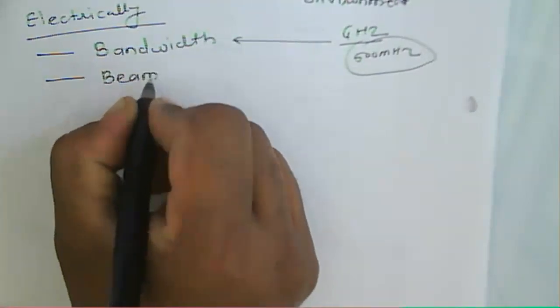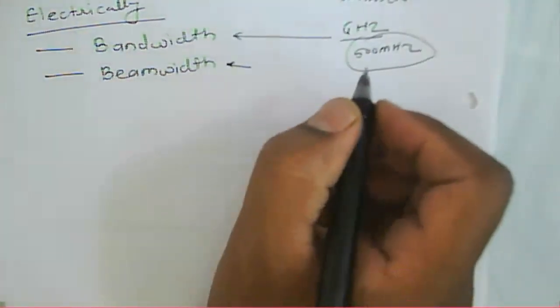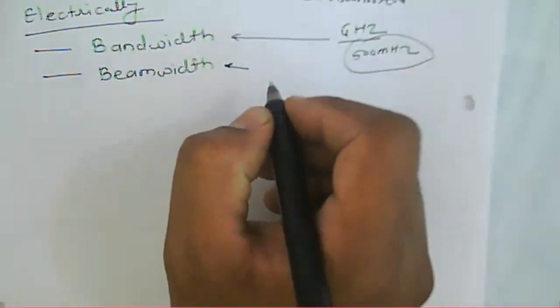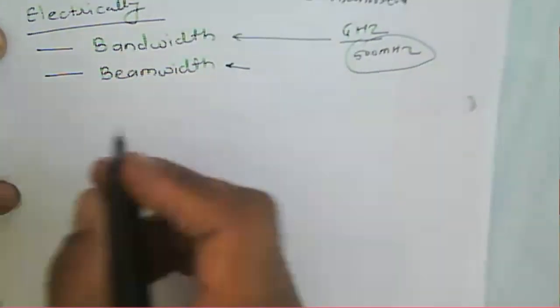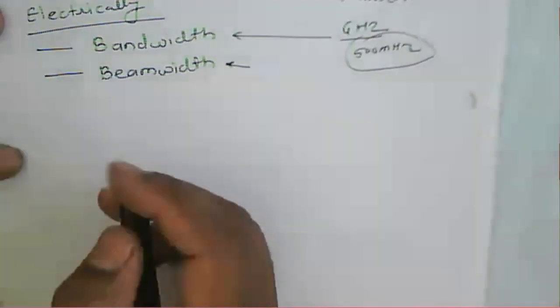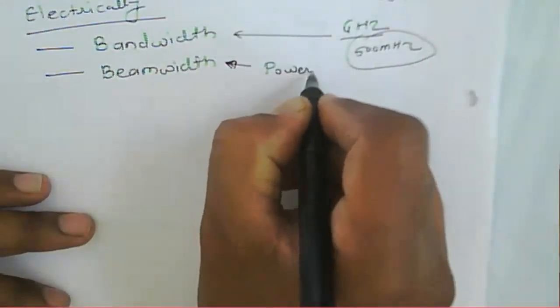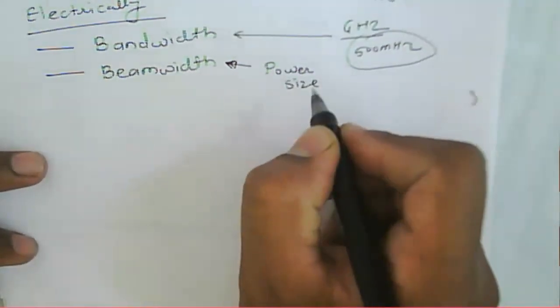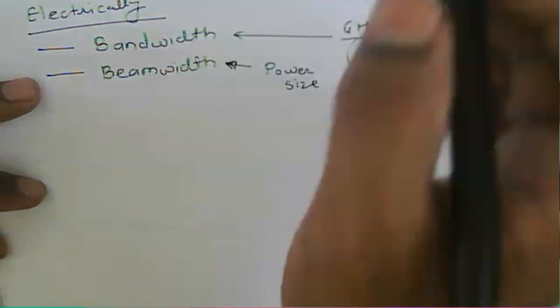The next requirement concerns area coverage and antenna gain. If the beam is narrow, we need a high-gain, high-power antenna. If the beam is wide, there is no requirement for high power. Area coverage also depends on the power requirement and the size of the antenna, since the antenna is focused from the satellite toward the earth station.